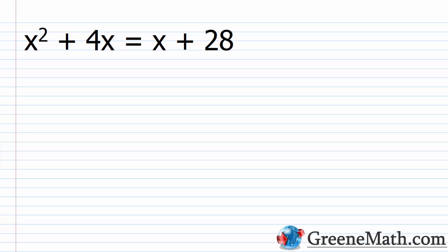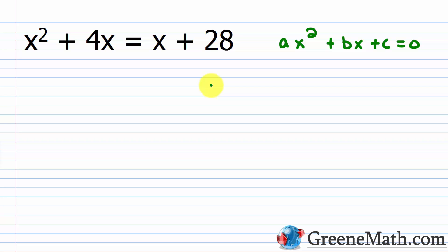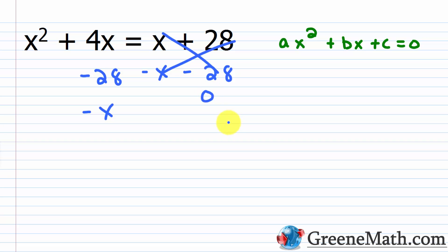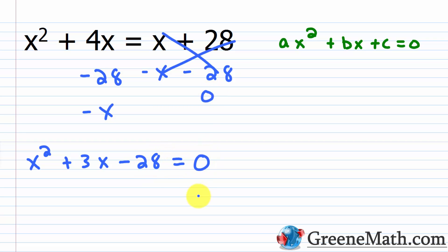Let's start out by working through this problem: x squared plus 4x equals x plus 28. We want to solve this quadratic equation by factoring, meaning we want to find the values for x that make it a true statement. The first thing I want to do is write it in standard form — ax squared plus bx plus c is equal to zero. I'll use the addition property of equality: subtract 28 from each side and subtract x from each side. On the right, this all cancels to zero. On the left, I have x squared, then 4x minus x is plus 3x, and then minus 28, equal to zero.